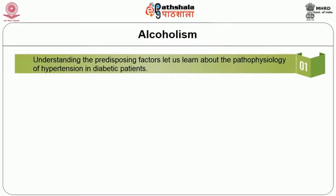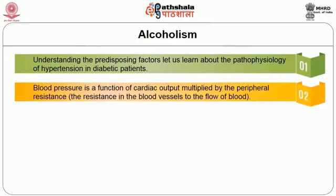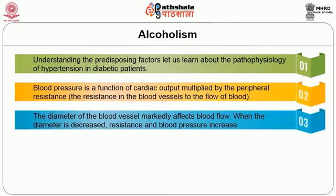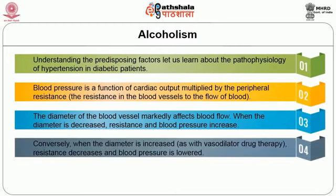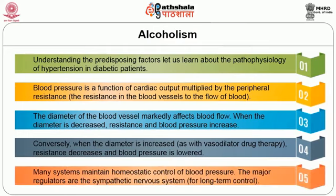Now let us learn about the pathophysiology of hypertension in diabetic patients. Blood pressure is a function of cardiac output multiplied by the peripheral resistance, which is the resistance in the blood vessels to the flow of blood. The diameter of the blood vessel markedly affects blood flow. When the diameter is decreased, as in atherosclerosis, resistance and blood pressure increase. Conversely, when the diameter is increased as with vasodilator drug therapy, resistance decreases and blood pressure is lowered. Many systems maintain homeostatic control of blood pressure.